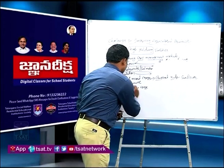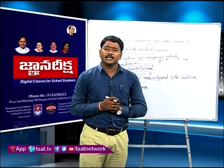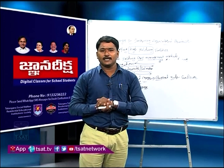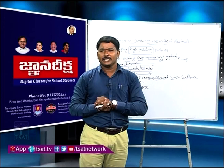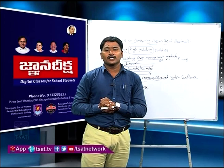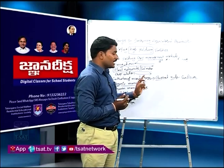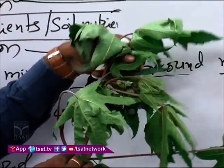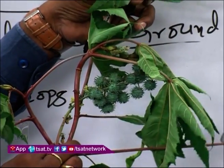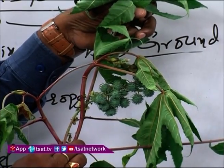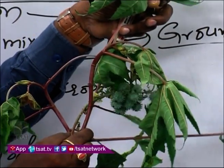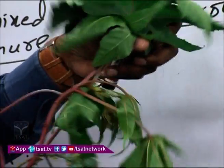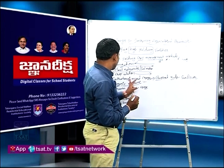In organic manure, we use decaying plant materials and animal excreta. Examples include gingerly waste, groundnut waste, castor, neem, and jatropha nut powder. Castor is one example used as organic manure, where decaying plant materials are used as manure. Groundnuts, gingerly, castor, cotton, neem, and jatropha are all used as organic manure.